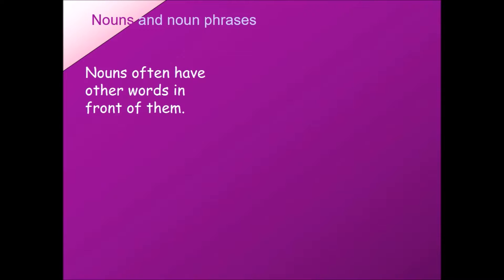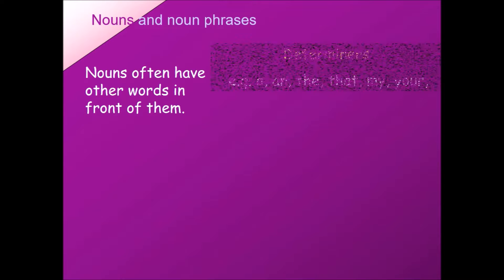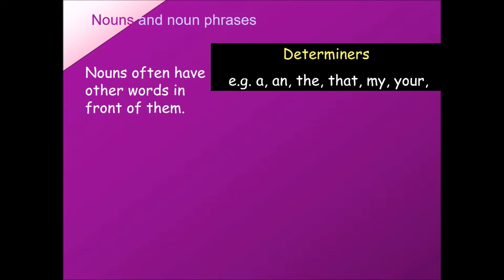Nouns have other words in front of them. These are called determiners. Each of these determiners either refers to or quantifies a noun. When we talk about referring, we mean who in particular we're trying to refer to. When we talk about quantifying, we mean how much or how many of that noun.